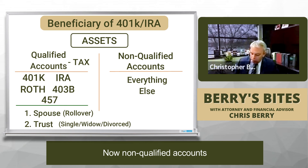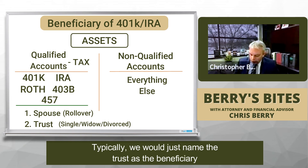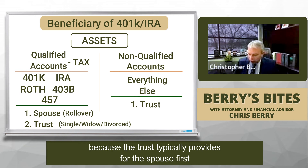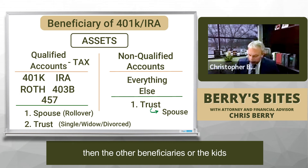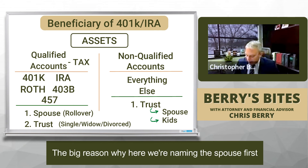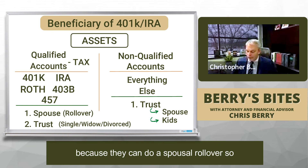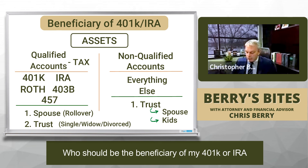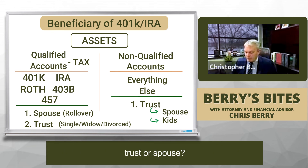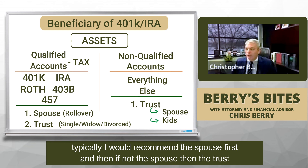For non-qualified accounts — really everything else — typically we would just name the trust as the beneficiary, because the trust typically provides for the spouse first, and then the other beneficiaries are the kids. The big reason we name the spouse first on qualified accounts is there's a tax benefit: they can do a spousal rollover. So who should be the beneficiary of your 401k or IRA — trust or spouse? Typically, spouse first, and then if not the spouse, the trust.